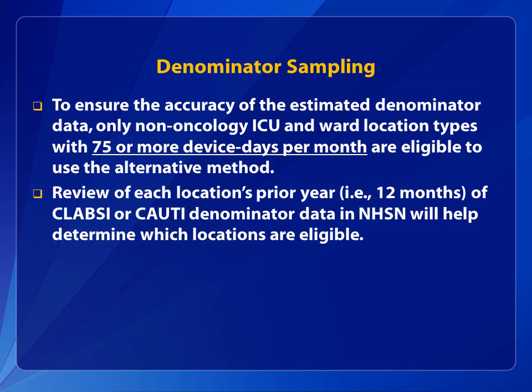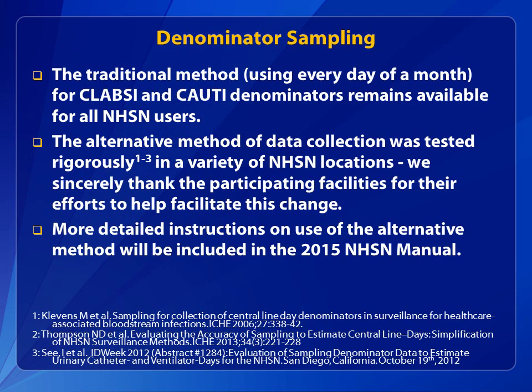To ensure the accuracy of the estimated denominator data, only non-oncology ICU and ward location types with 75 or more device days per month are eligible to use the alternative method. A review of each location's prior year of CLABSI or CAUTI denominator data in NHSN will help determine which locations are eligible. The traditional method of using every day of a month for CLABSI and CAUTI denominators remains available for all NHSN users. The new alternative method was tested rigorously in a variety of NHSN locations, and we sincerely thank the participating facilities for their efforts.